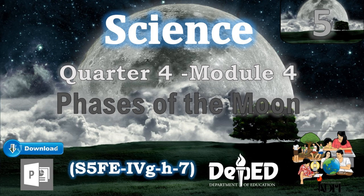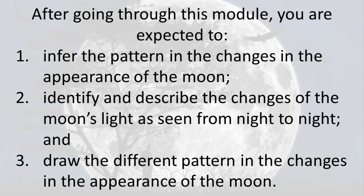Science Grade 5, Quarter 4, Module 4: Phases of the Moon. After going through this module, you are expected to: 1) infer the pattern in the changes in the appearance of the moon; 2) identify and describe the changes of the moon's light as seen from night to night; and 3) draw the different patterns in the changes in the appearance of the moon.